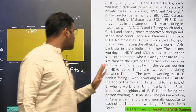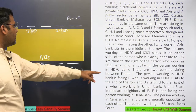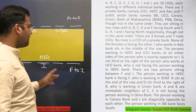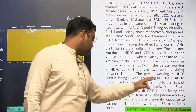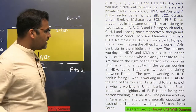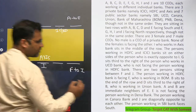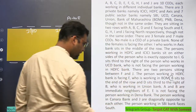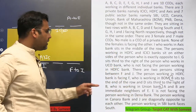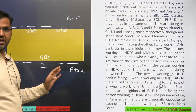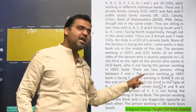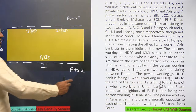Now look for another unique independent clue: B sits at the end of the row and D sits to the right of B, with B working in Union Bank. This statement is independent of other variables and gives a unique arrangement of B and D, so use it.